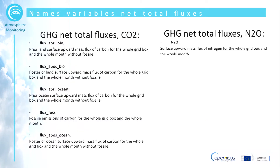This slide lists the names of the variables split by source. For the greenhouse gas net total fluxes for carbon dioxide, there are five variables. Nitrous oxide contains only one variable: surface upward mass fluxes of nitrogen for the whole grid box and the whole month.